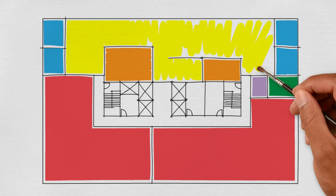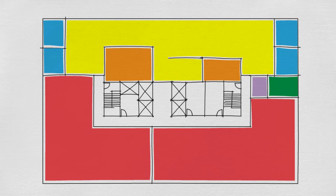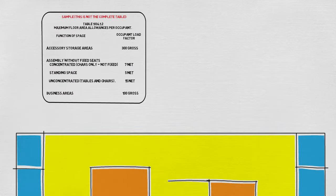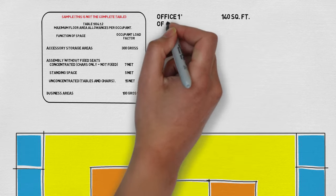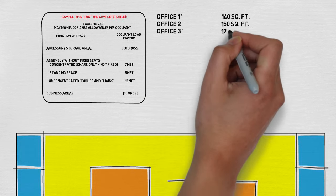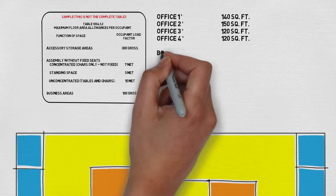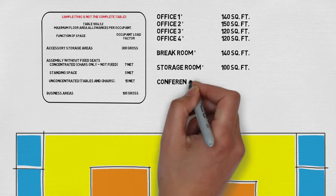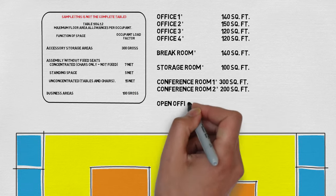After you figure this out, now that we know what these areas are being used for, we need to know the square feet of each of these areas. So we tally each one of these areas. We figure out how many square feet are in each of the offices or each of the break rooms etc.